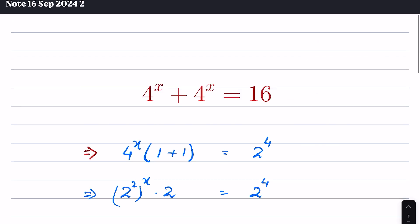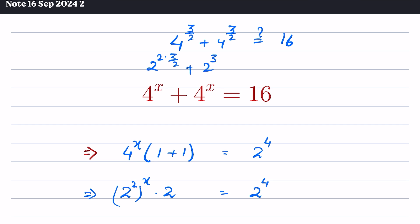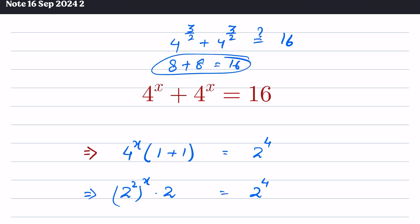We can verify this answer: 4 raised to 3/2 plus 4 raised to 3/2 should equal 16. Writing 4 as 2^2: (2^2)^(3/2) plus (2^2)^(3/2). The 2s cancel, giving 2^3 plus 2^3, which is 8 plus 8 equals 16. Verified.